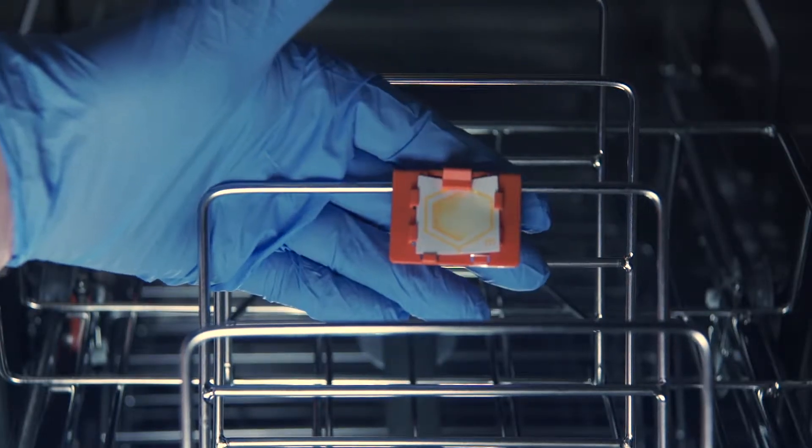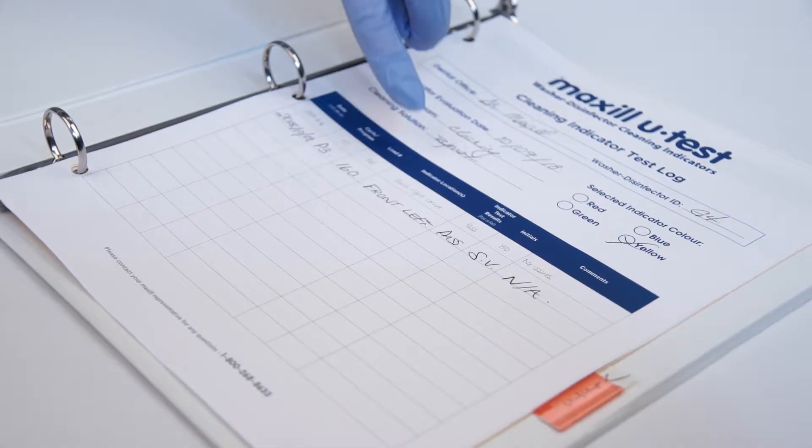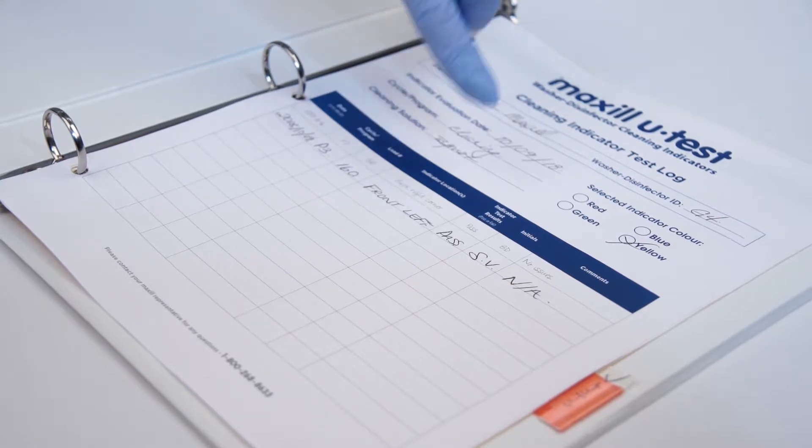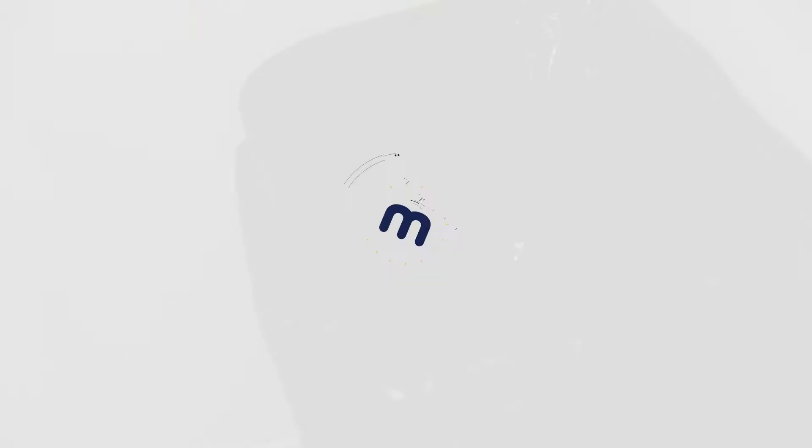In the event that the entire test area is not washed off, refer to the troubleshooting guide. Log your results on the provided Maxill U-Test cleaning indicator test log. Once your results have been logged, the indicators may be discarded.